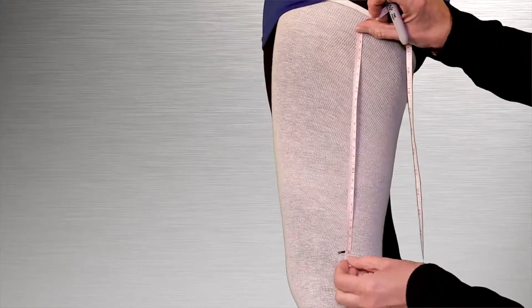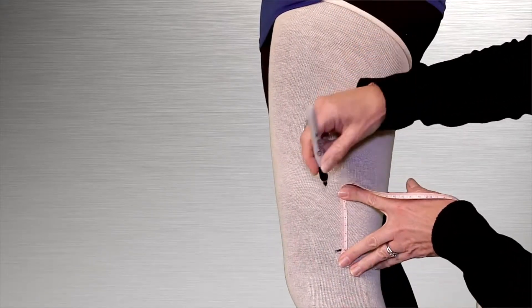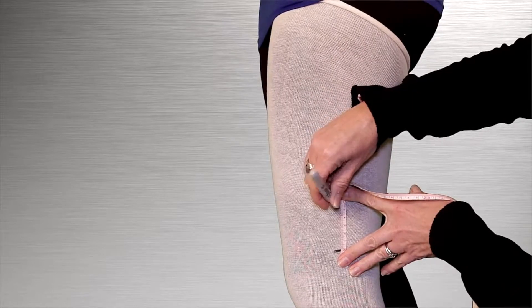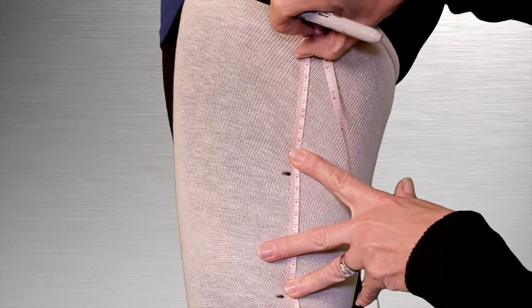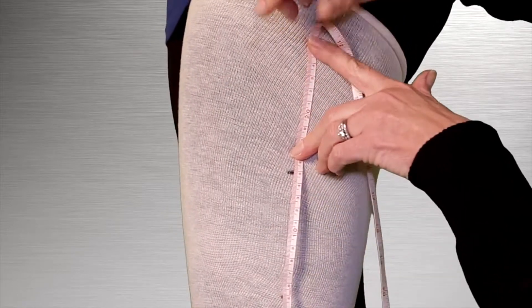Starting with the zero of the tape measure on the mark at the patella, mark the lateral aspect of the leg at 5 centimeters, 15 centimeters, and 23 centimeters above the zero point.